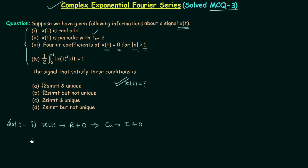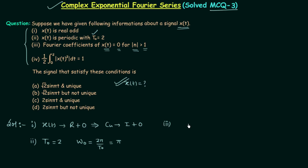The second information says xt is a periodic signal with fundamental time period T₀ equal to 2. We know ω₀ is equal to 2π divided by T₀, so 2π divided by 2 gives us π. Therefore ω₀ is equal to π.